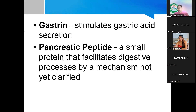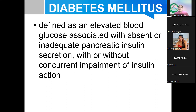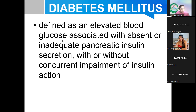If we have a problem with insulin, that leads to elevated blood glucose — diabetes mellitus. It is defined as chronically elevated blood glucose associated with absent or deficient insulin secretion, with or without concurrent impairment of insulin action. Some patients still produce insulin, but have resistance to it — hence the 'with or without concurrent impairment of insulin action.'